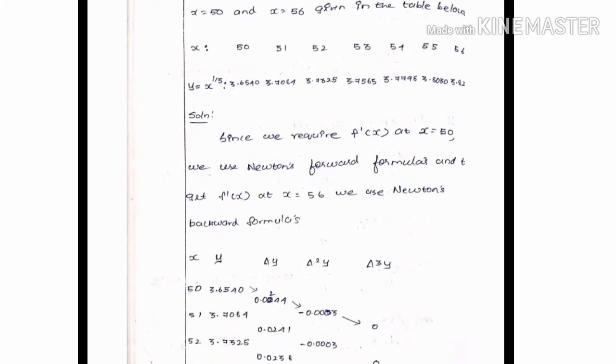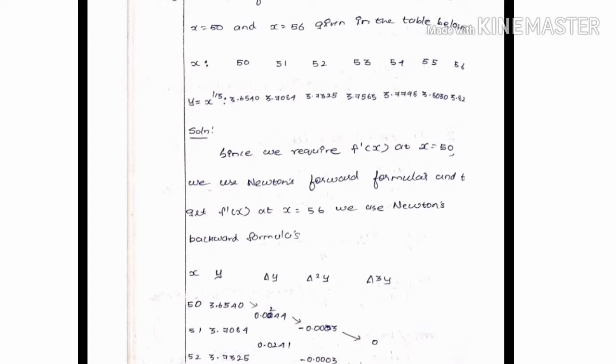Now, since x equals 50 is at the beginning of the table, we will use Newton's forward formula. For x equal to 56, which is at the end, we will use Newton's backward formula.